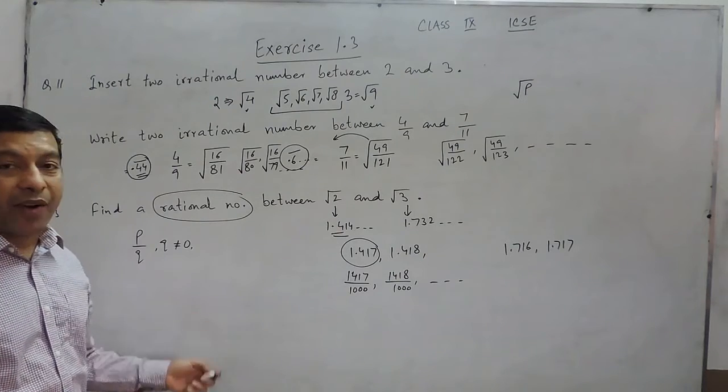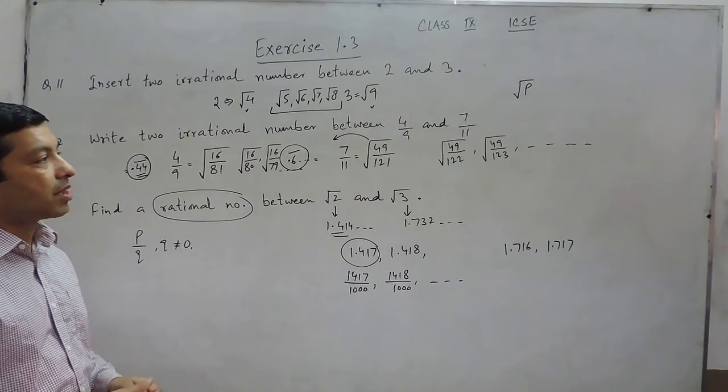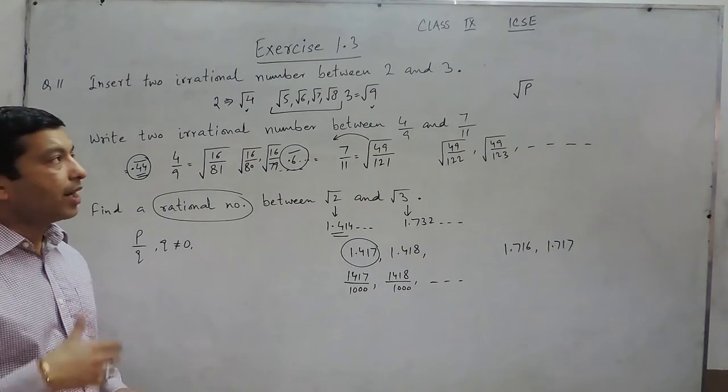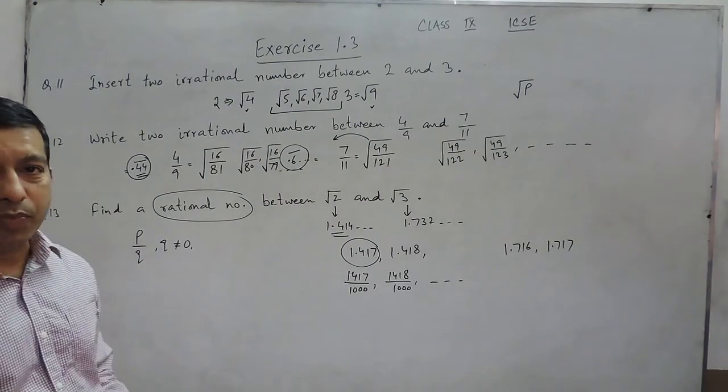And we have to keep one thing in mind that there can be infinite number of rational numbers and infinite number of irrational numbers between two rational or two irrational numbers. Thank you. In the next class we will talk about question number 14 onwards.